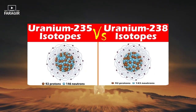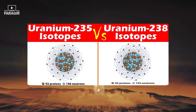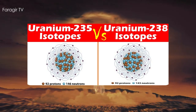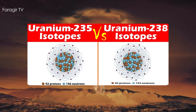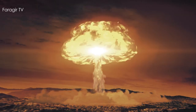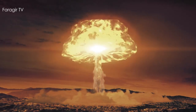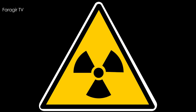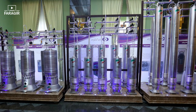Inside the atomic bomb there is a tube in which one part of uranium is placed on one side and another part on the opposite side. When the explosion starts, one of the parts moves toward the other. When these two parts meet, a chain reaction starts and an explosion occurs.